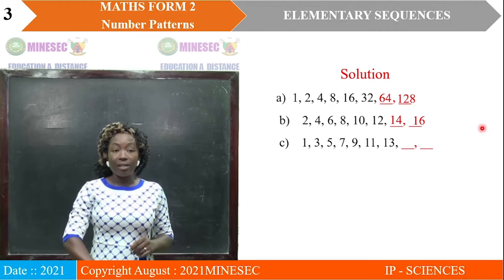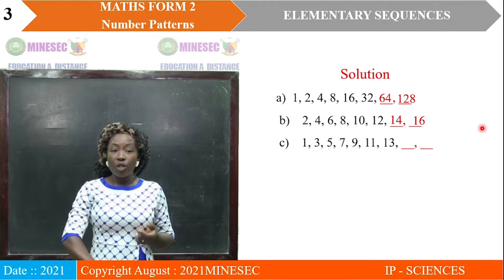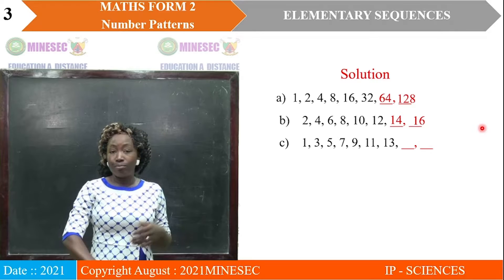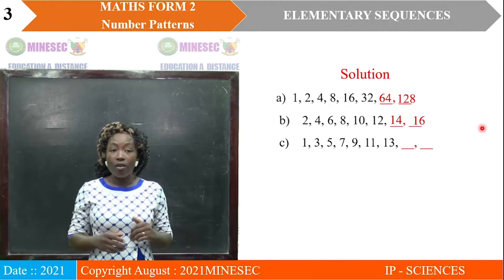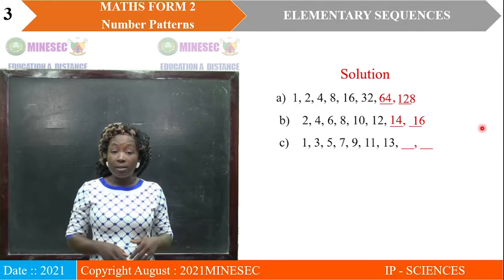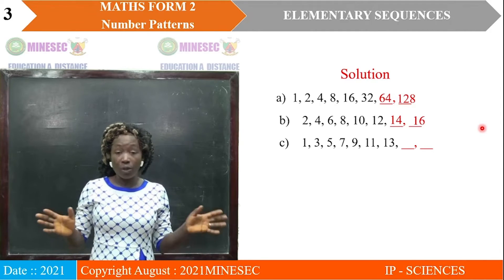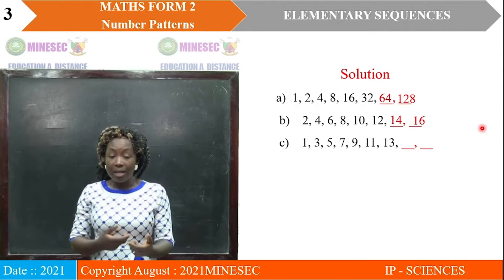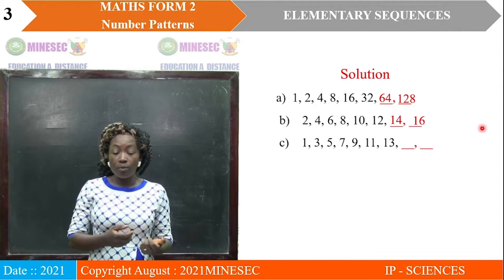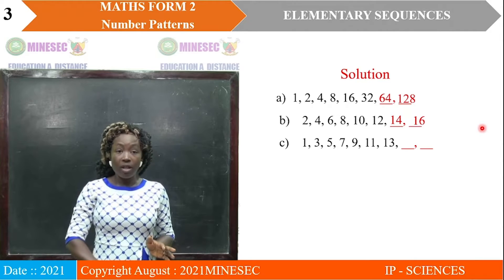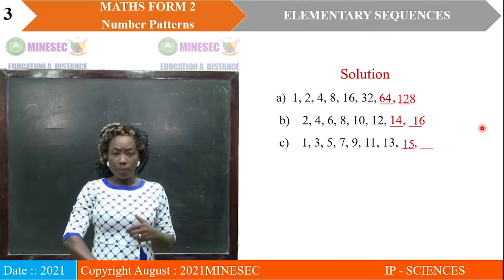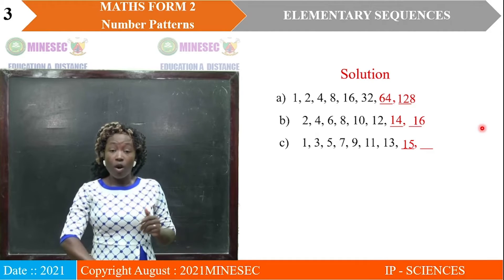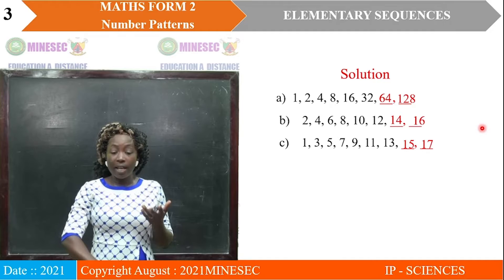The next sequence C: 1, 3, 5, 7, 9, 11, 13. You discover here that there is addition again, or you can say the set of odd numbers. If you say the rule is adding 2 to the previous term to get the next term, you are still correct. So the next term will be 13 plus 2 to give 15, and the next will be 17.